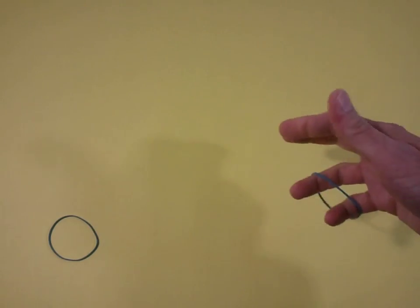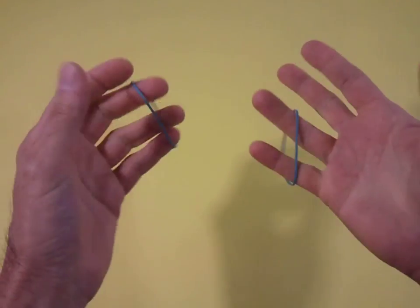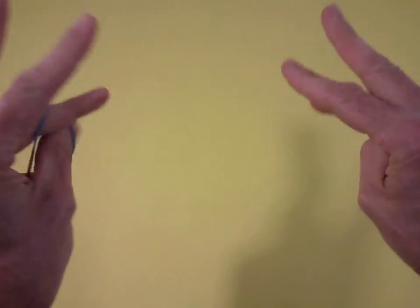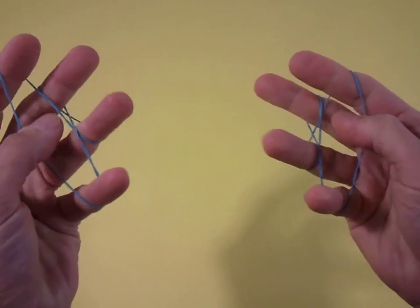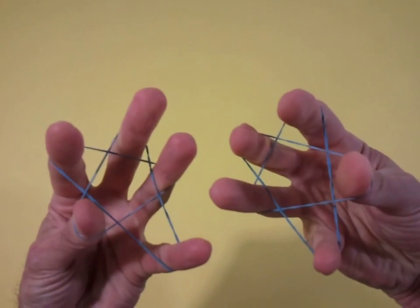And while you're working on that, think about symmetry, and also think about taking two rubber bands in two hands and seeing what you can do. Try that.